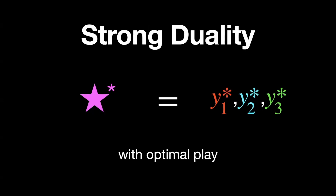But we can say something even stronger, known as strong duality: with optimal play from both sides, these two games have equal value, and therefore the primal and dual linear programs have equal optimal value.